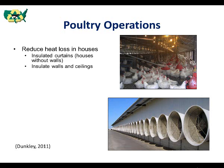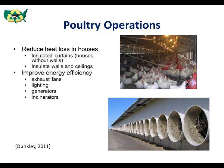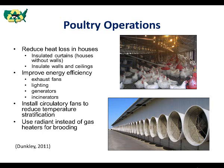Propane is mainly used for heating purposes, so reducing heat loss in poultry barns is key to reducing propane use. For houses without walls, insulated curtains help to limit heat loss, while for enclosed houses, walls and ceilings can be insulated. On breeder farms, the same study found that about 85% of greenhouse gas emissions were a result of electricity used for lighting and ventilation. Improving energy efficiency of exhaust fans, lighting, generators, and incinerators can reduce the total amount of electricity used, thus resulting in fewer emissions. Other mitigation options include installing circulatory fans to prevent temperature stratification and using radiant instead of gas heaters for brooding.